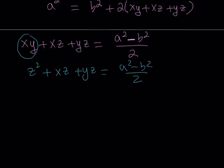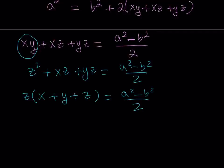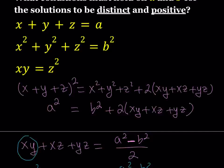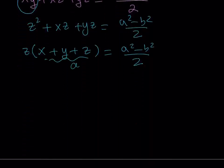What is really significant here is that we can factor out a Z. That's beautiful. When we do, writing in alphabetical order, we get Z(X+Y+Z) = (A²−B²)/2. Now, since we already know that X+Y+Z equals A from the original problem, we can substitute that in. So we get Z·A = (A²−B²)/2, and dividing both sides by A gives us Z = (A²−B²)/(2A). So I got the value of Z — my goal was to find the conditions, but finding Z is definitely helpful.